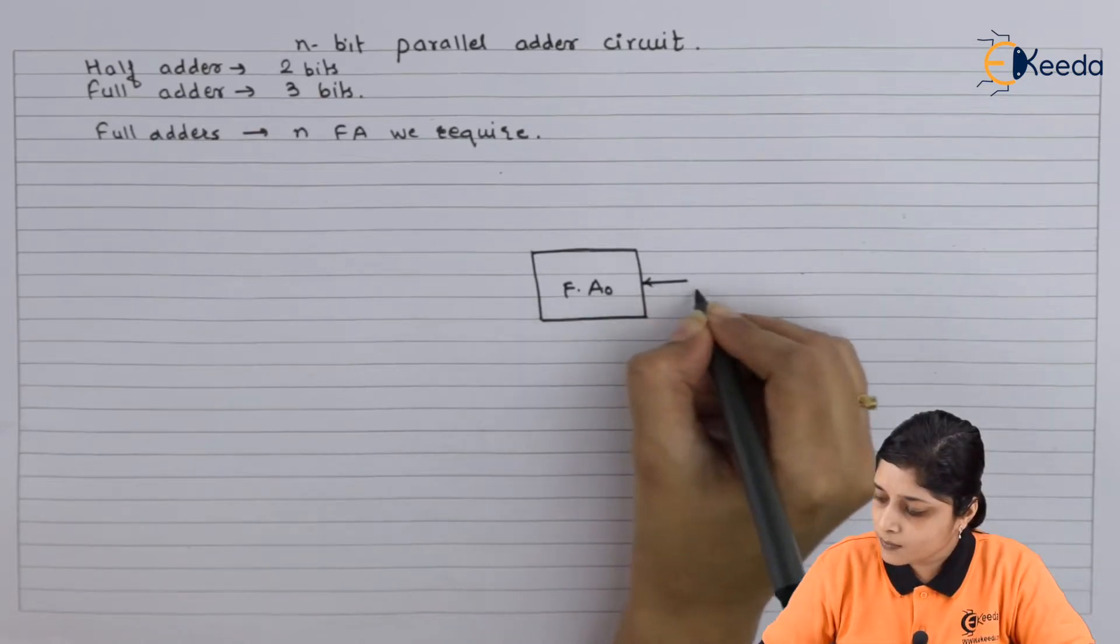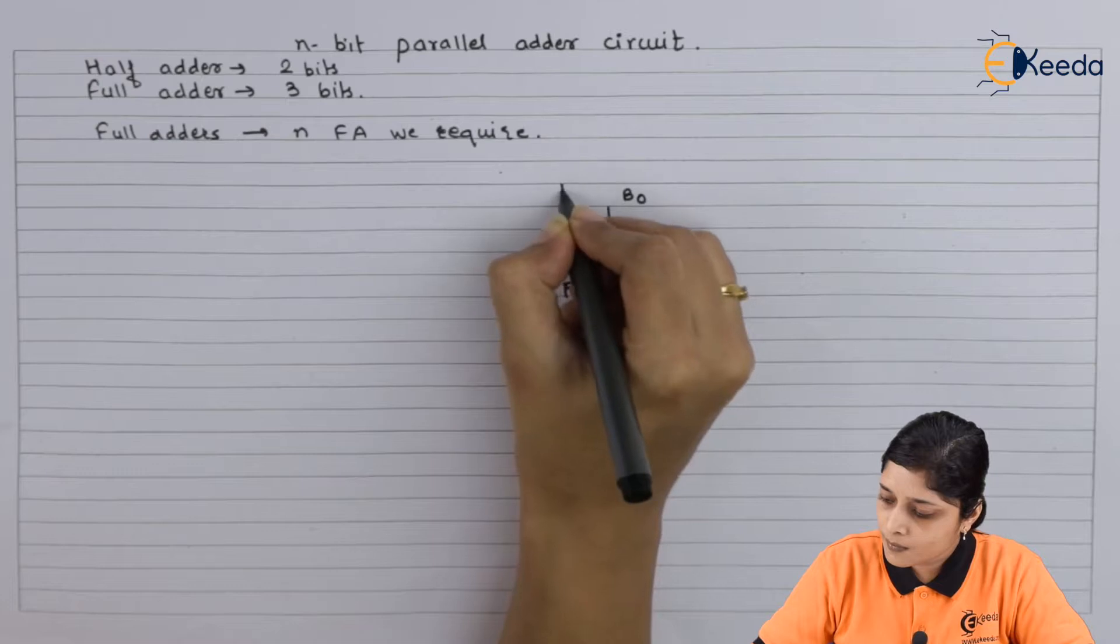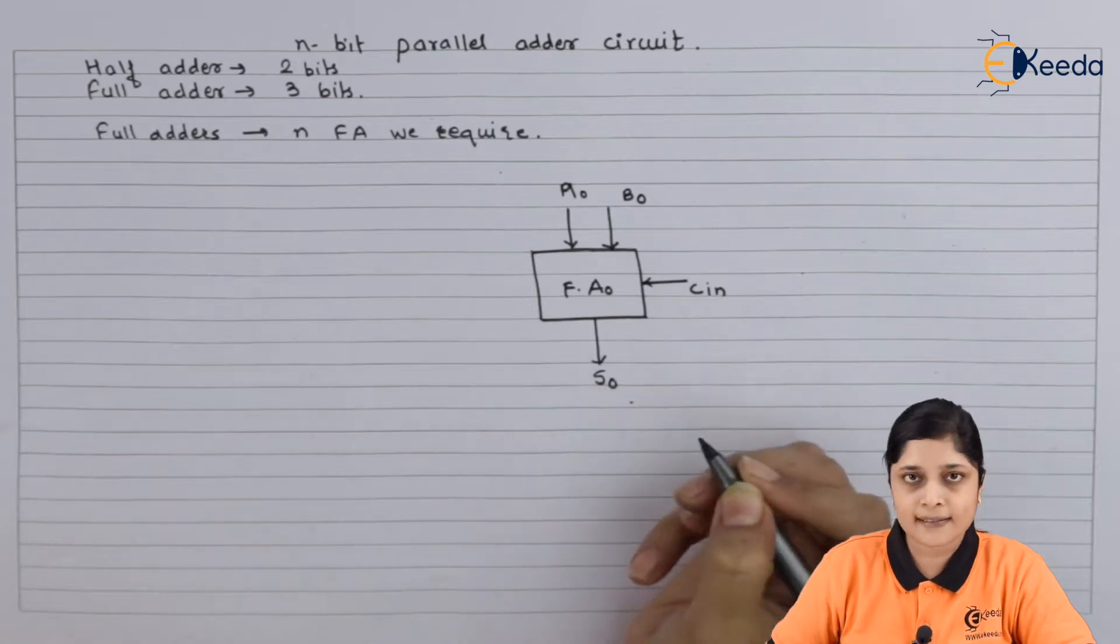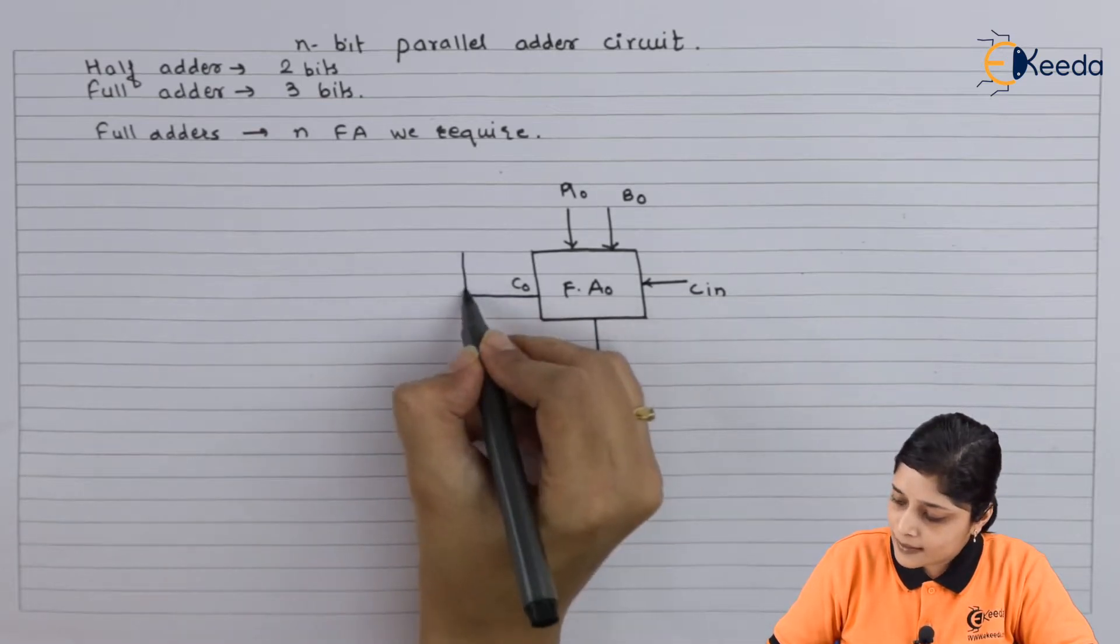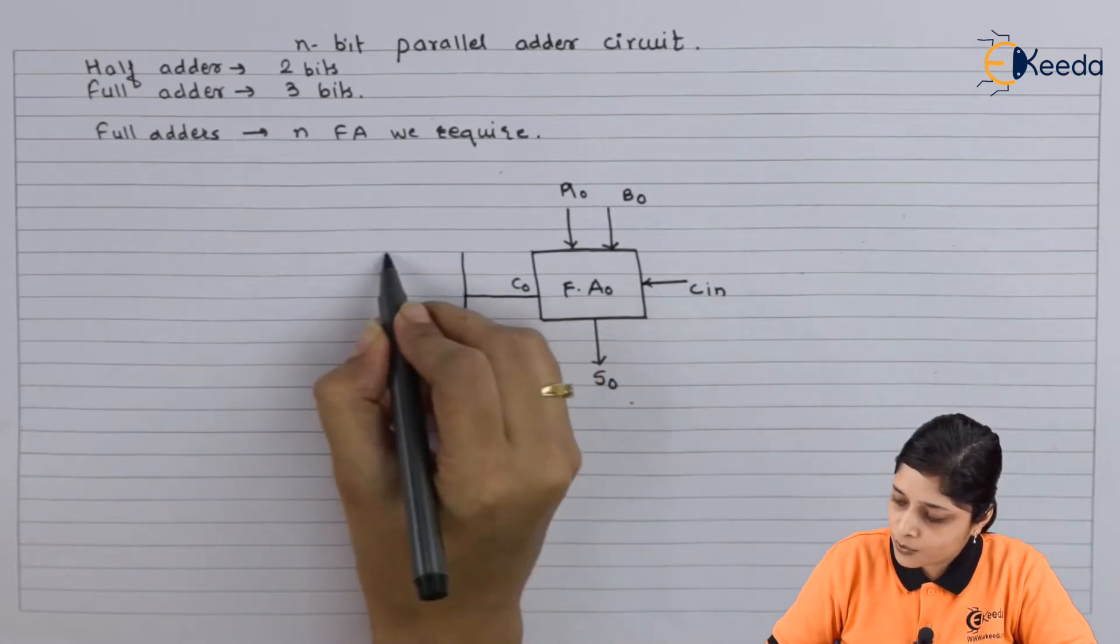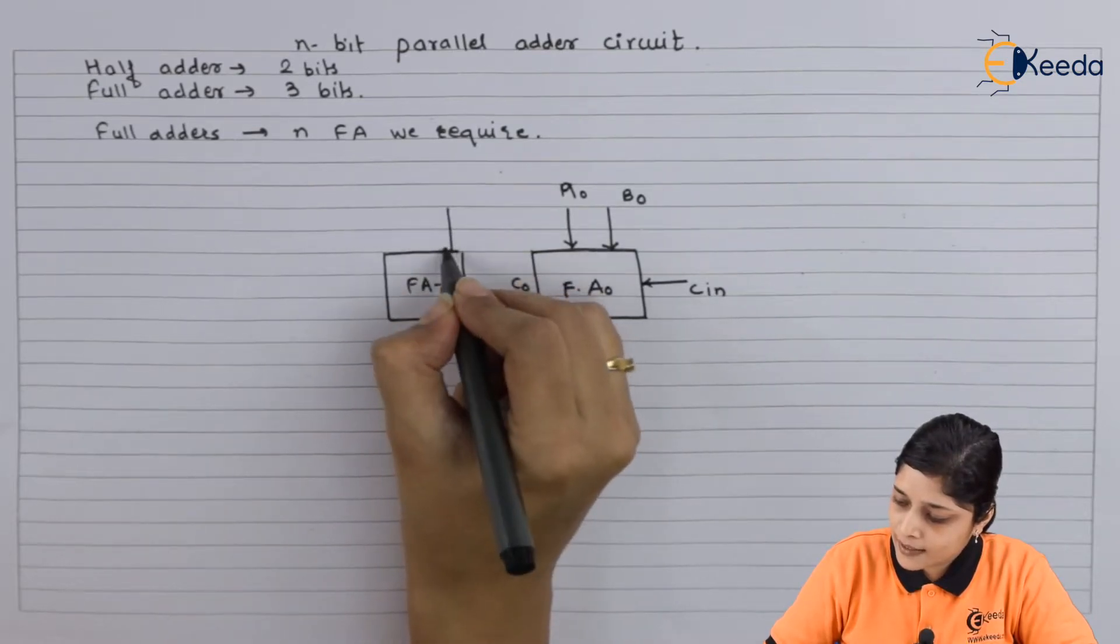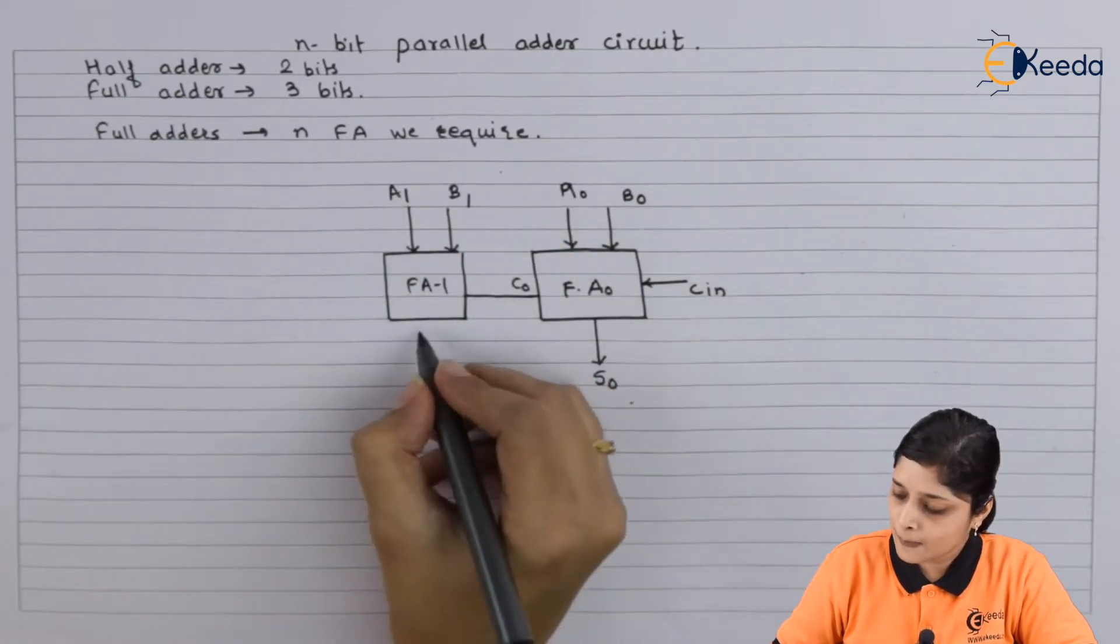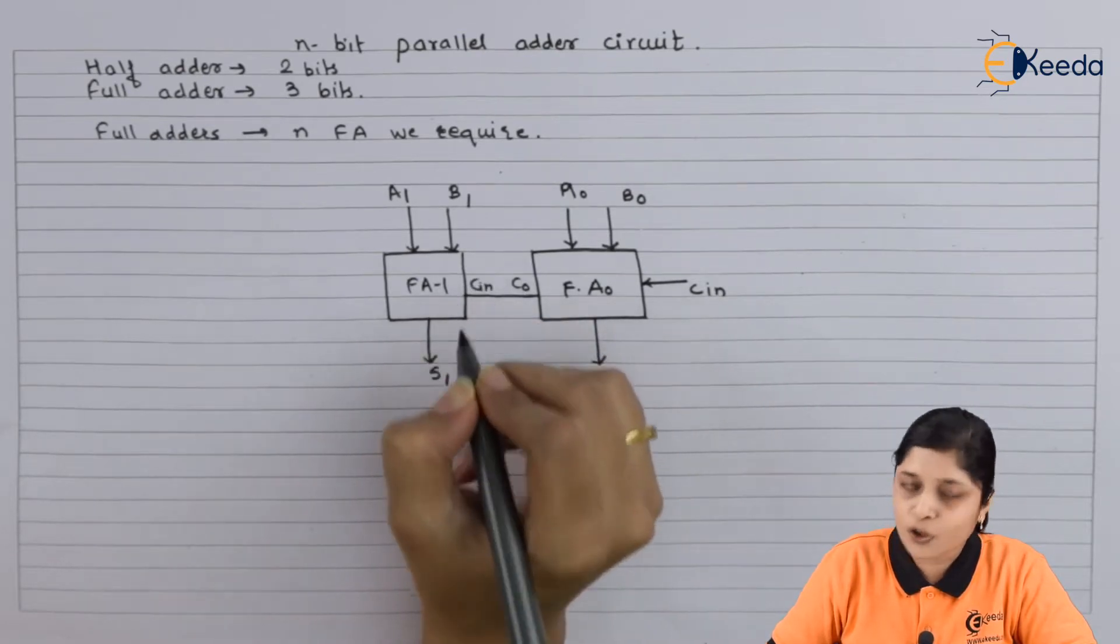Full adder 0, C in, first bits are B0, A0. Output is S0 and C0. This you have to give it to the next full adder circuit. Full adder 1, it has input bits B1 and A1, output is S1. This C0 becomes C in for next full adder.